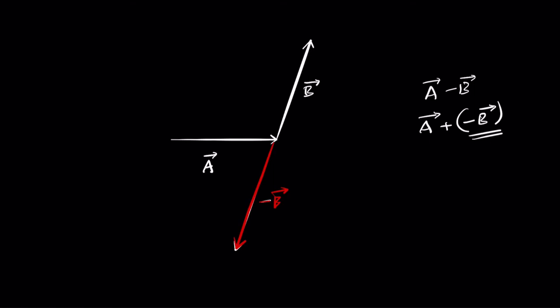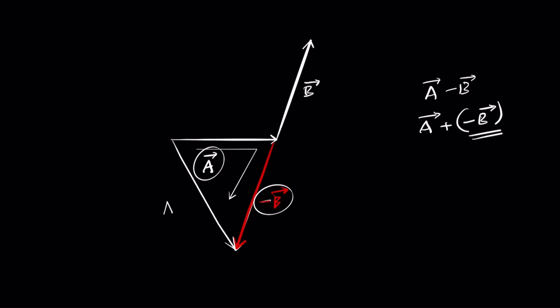How would you write A-bar minus B-bar? Notice that vectors can be added in any order. The closing side adds up to both vectors. So A-bar plus negative B-bar gives this vector, which becomes A-bar minus B-bar — the subtraction of both vectors. Even in subtraction, we are adding the vectors; we take the negative of the second vector and add it to the first.